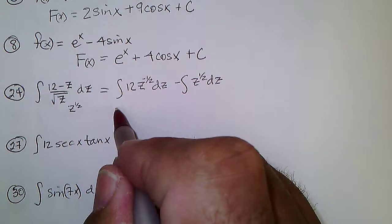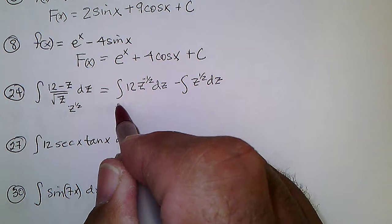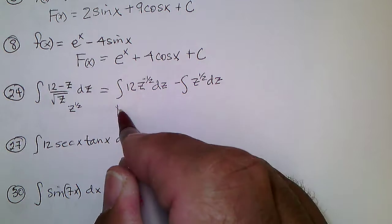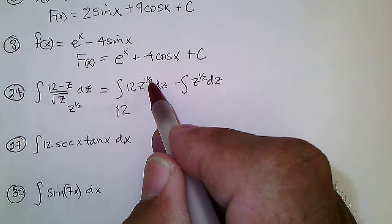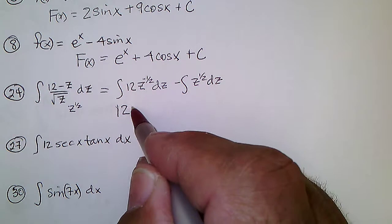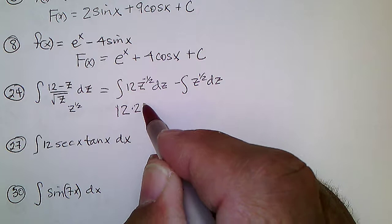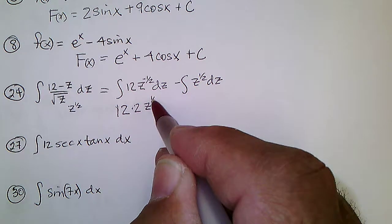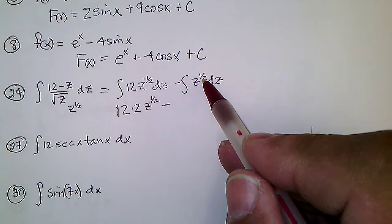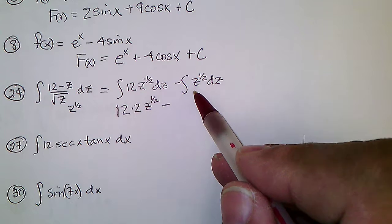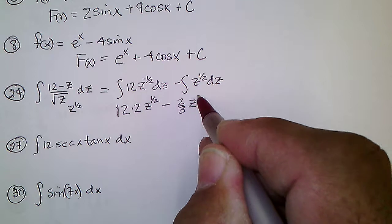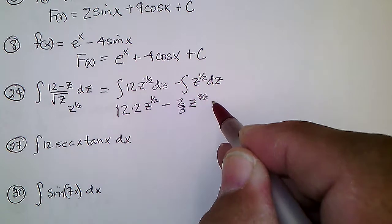Finding the antiderivatives: we get 12, and raising the power by 1 gives 1/2, so dividing by 1/2 means times 2 — giving z to the 1/2. Then minus: raising the power by 1 gives 3/2, and dividing by 3/2 is like multiplying by 2/3, giving z to the 3/2, plus C.